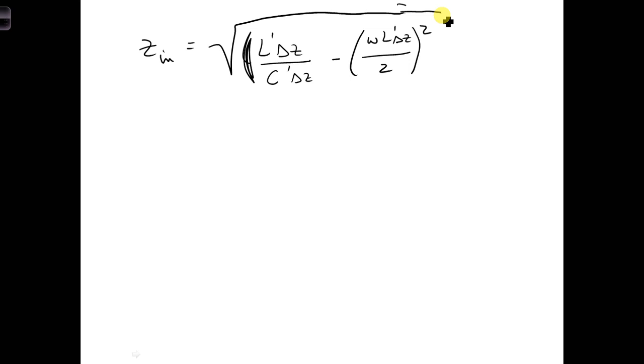In this equation, the delta z's in the first term can cancel. And since each delta z transmission line segment is infinitesimally small, we can take the limit where delta z goes to zero. In this case, which term dominates? Which of these two terms dominate? The first one. Since delta z is in the numerator of the second one, that term will go to zero.